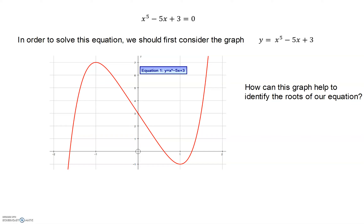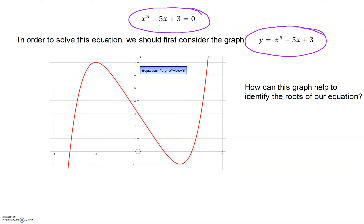Again, we're going to be very careful with our language. At the top here we have the equation we are trying to solve, and we are going to draw the graph of y equals x to the power of 5 minus 5x plus 3 — that's shown in the diagram here. The question is, how can this graph help us identify where the roots are? Because y has been replaced with 0, we're looking at the points where y is 0 — in other words, where the graph cuts the x-axis. We can see from the diagram that we have three roots, three values of x. They don't go through nice integer positions — they are irrational.